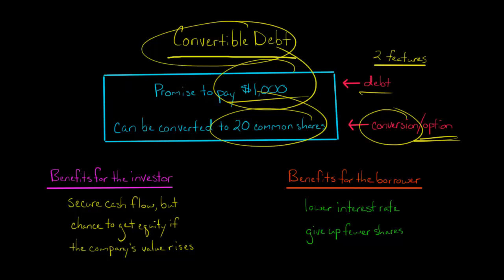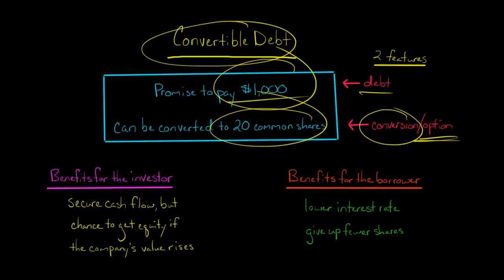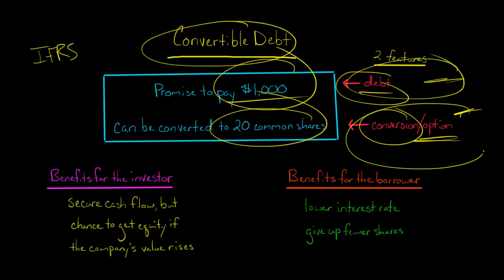Under U.S. GAAP, this is all treated as debt — I'll show you the journal entries in a minute. With certain exceptions, it could be bifurcated into two different parts: the debt and the conversion feature. Under IFRS, which I'll make another video on, you're going to separate out these two components and account for them differently — the debt and the conversion feature is treated as equity. But let's stick with U.S. GAAP in this video, and we'll get to IFRS in the next video.